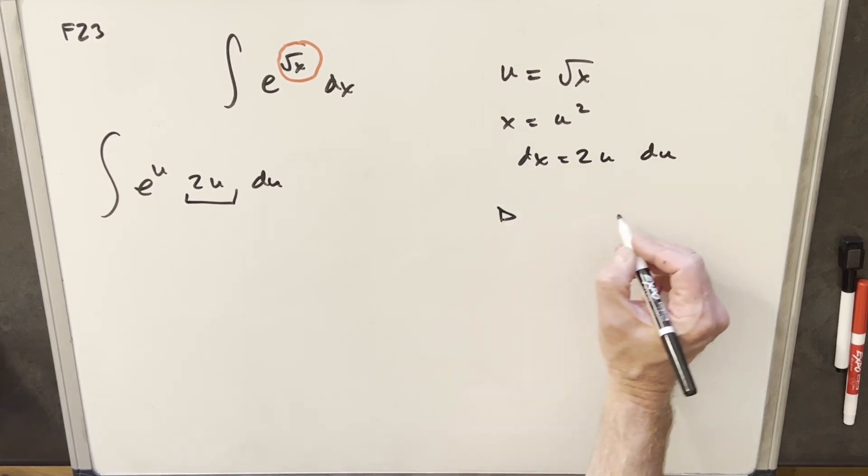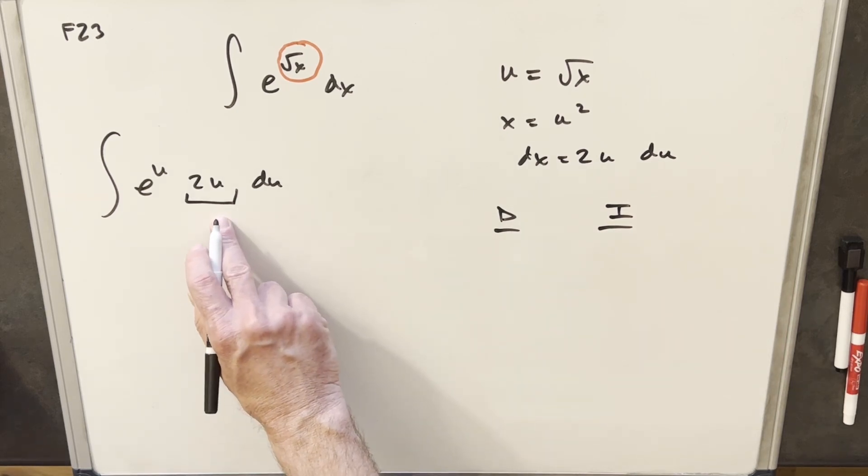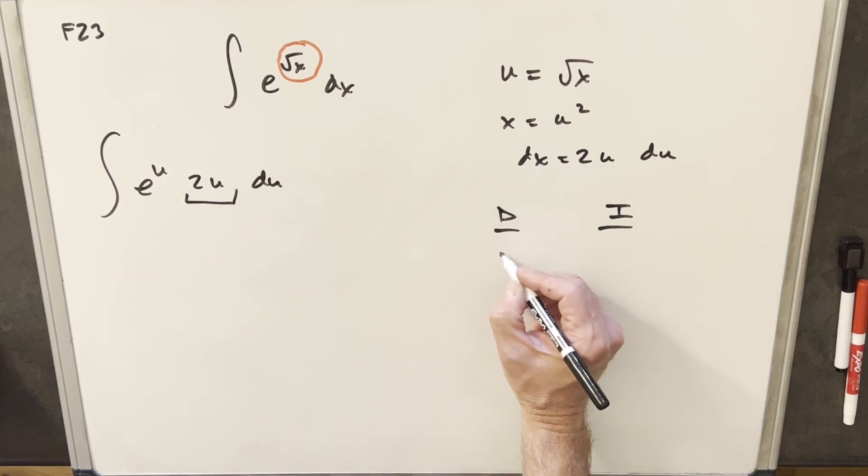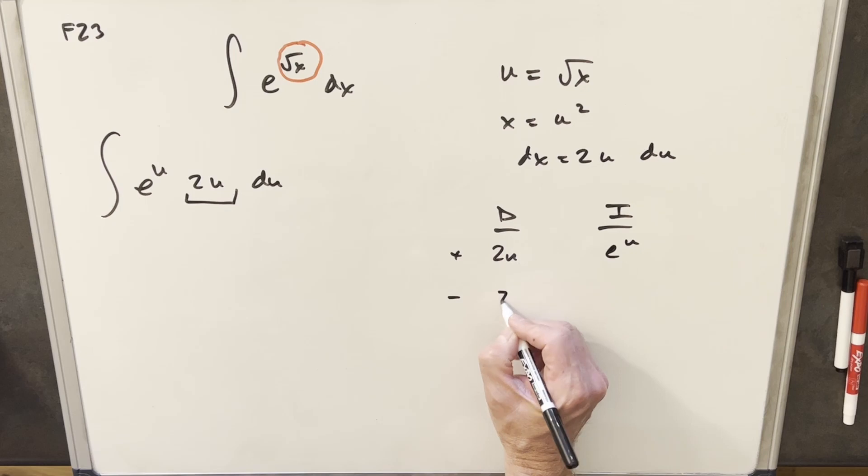So for the integration by parts, I'm going to use the DI method, tabular integration. Okay, we're going to differentiate one column and integrate one column. And like I said, I want to integrate my 2u because it's going to reduce. And so by doing that, we differentiate 2u, we're going to have just 2. We differentiate again, we get 0.